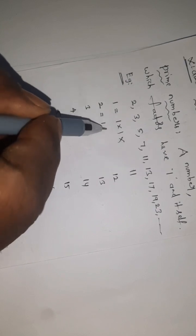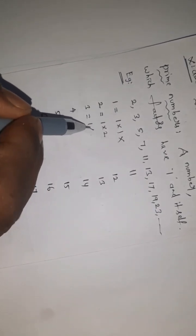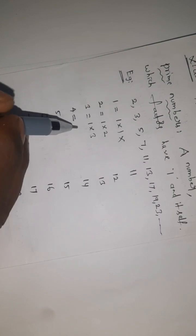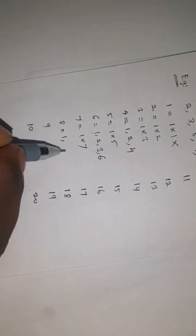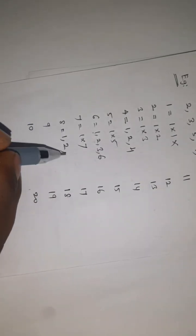Second number: 1 times 2. Third number: 1 times 3. Fourth: 1 table, 2 table, 4 table. Fifth: 1 times 5. Sixth: 1 table, 2 table, 3 table, 6 table - 1 times 6 is 6, 2 times 3 is 6. Seventh: 1 times 7. Eighth: 1 times 8 is 8, 2 times 4 is 8.